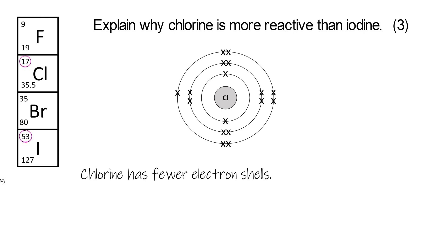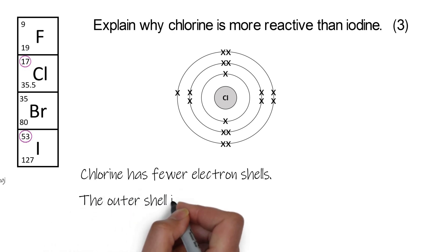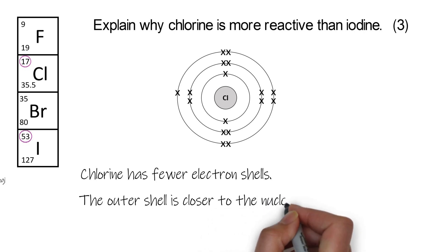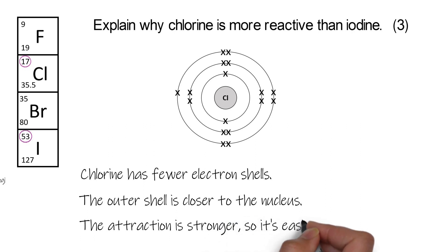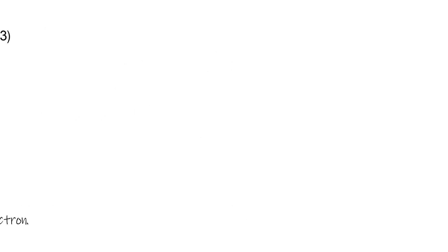Why is that important? Well, there's going to be an attraction between the positive nucleus and the negative electron you're trying to pull into the outer shell. The outer shell in chlorine is closer to the nucleus. There's also less electron shells in between the outer shell and the nucleus. So the fact that there's less shielding and that the nucleus is closer to the outer shell electron means the attraction is going to be stronger, so it will be easier to gain an electron. That makes chlorine more reactive.